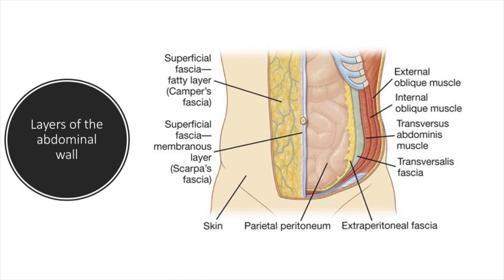So we're back in the OR and ready to make our first incision. Starting from superficial to deep, the first thing you will encounter is the skin. Deep to the skin is the two layers of the superficial fascia. You will first see a layer of fat called Camper's fascia, and right underneath that is the more membranous layer called Scarpa's fascia. Scarpa's fascia will firmly attach to the linea alba and the symphysis pubis, which are midline structures.